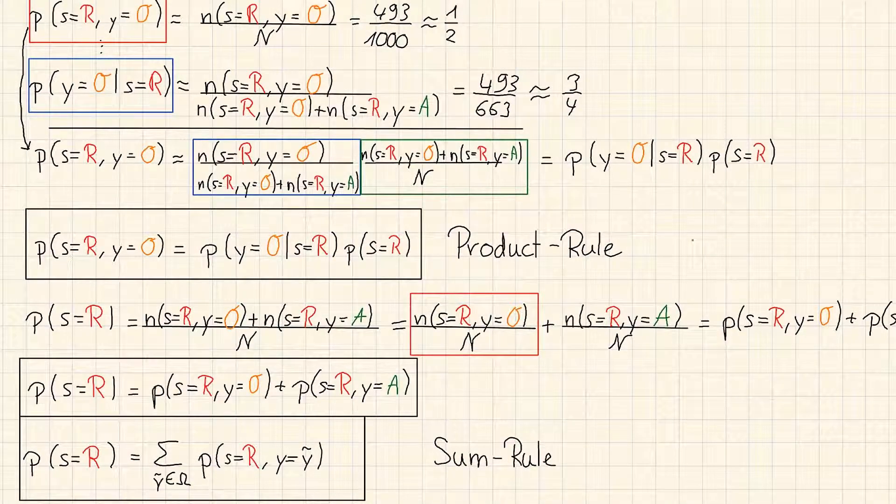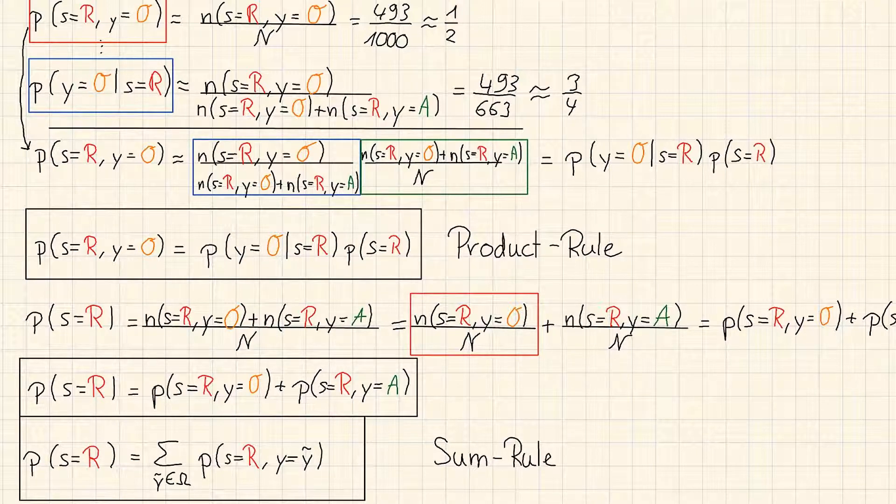Alright, welcome back to the next video about probability theory. In the last part we got to know the sum rule and the product rule. In this video we are going to derive Bayes' rule, which is very important. And from this standpoint it is not very difficult, as you will see.